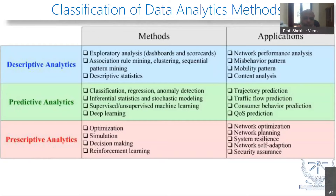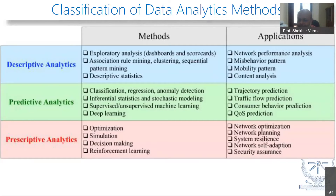In descriptive analytics, we have techniques which are exploratory analysis, association finding, clustering, sequential pattern matching, and descriptive statistics. What we want to know is network performance analysis, misbehavior patterns, mobility patterns, and content analysis — we are looking inside the data. If you want to predict from data, then we go for predictive analysis — classification, regression, anomaly detection, differential statistics, deep learning, supervised learning, semi-supervised learning, self-supervised learning, and unsupervised learning. All flavors of learning fall here, with applications from decision making to trajectory prediction.